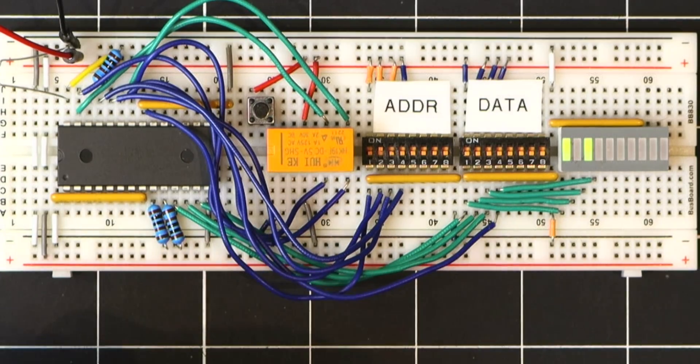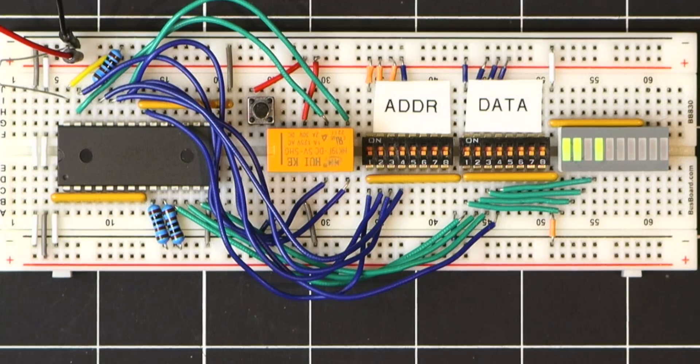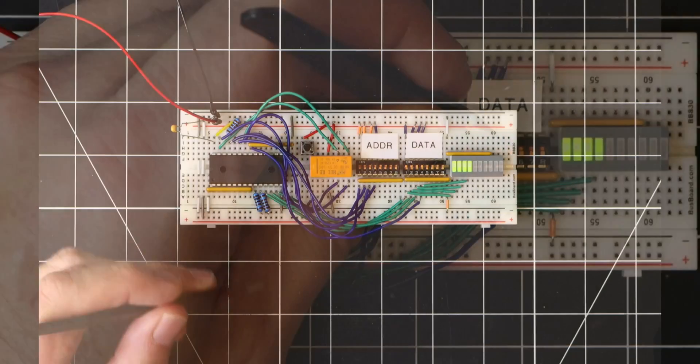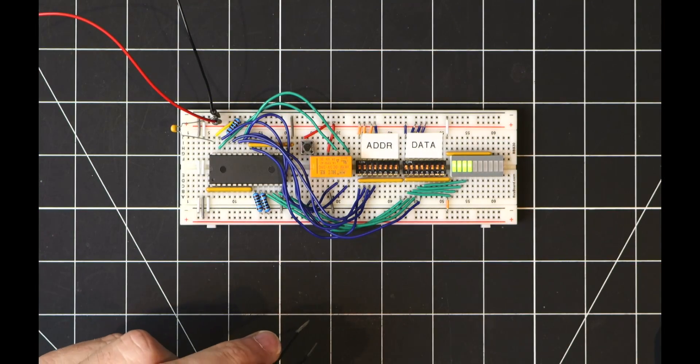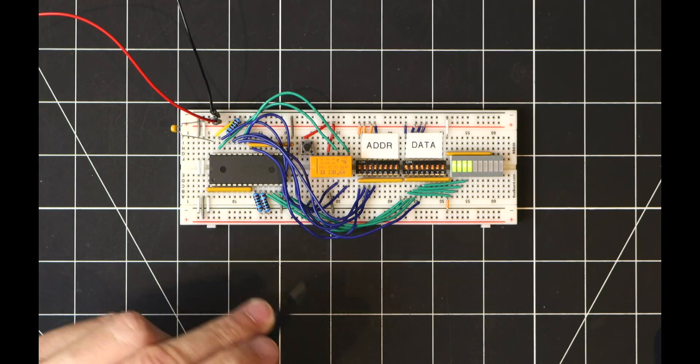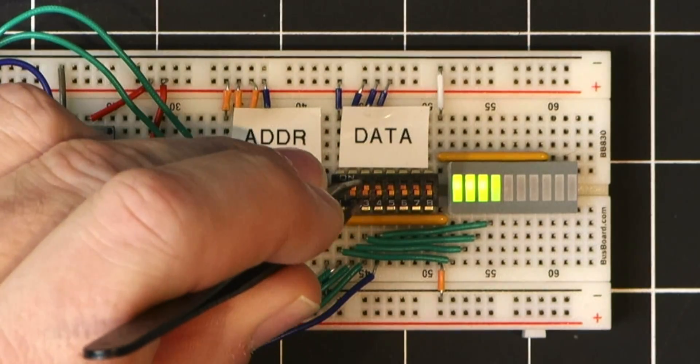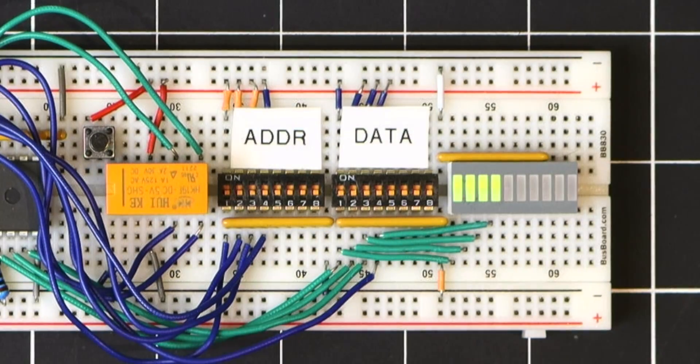So let's write a new value to the chip. I'll set the address back to 0000 and we'll create a data value of 1111 and then press the write button. And this engages the relay and flips the state of the write enable and the output enable pins. We can set the data switches back to all zeros and see that the value being read from address zero is the new data value that we just wrote to that address.